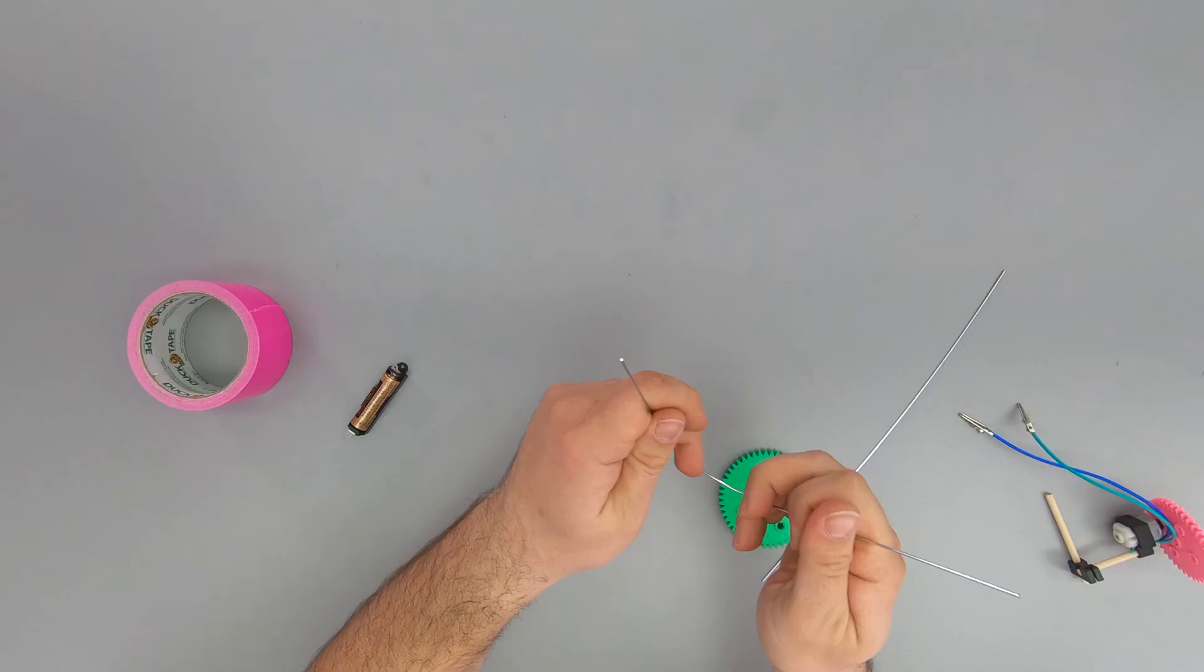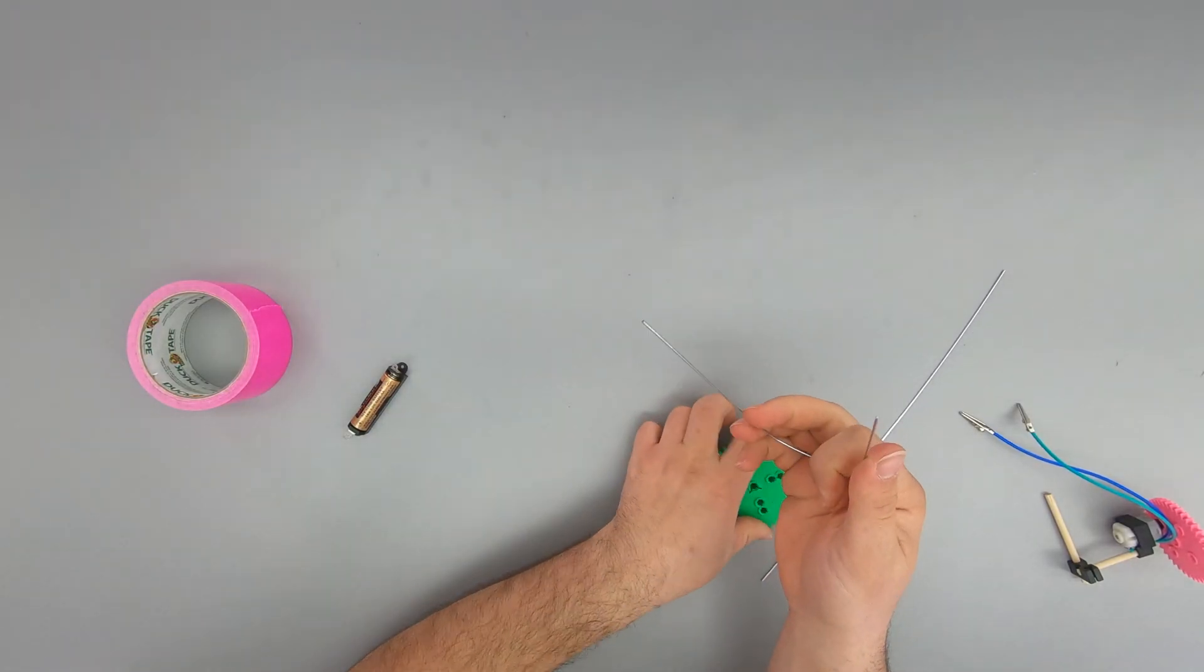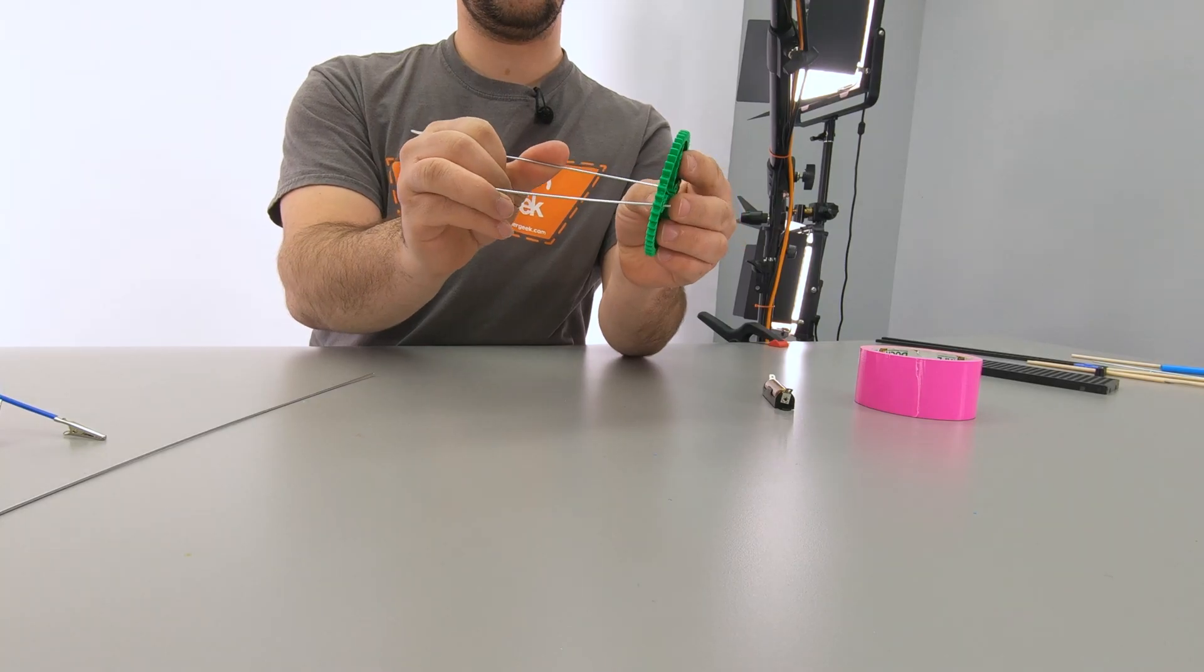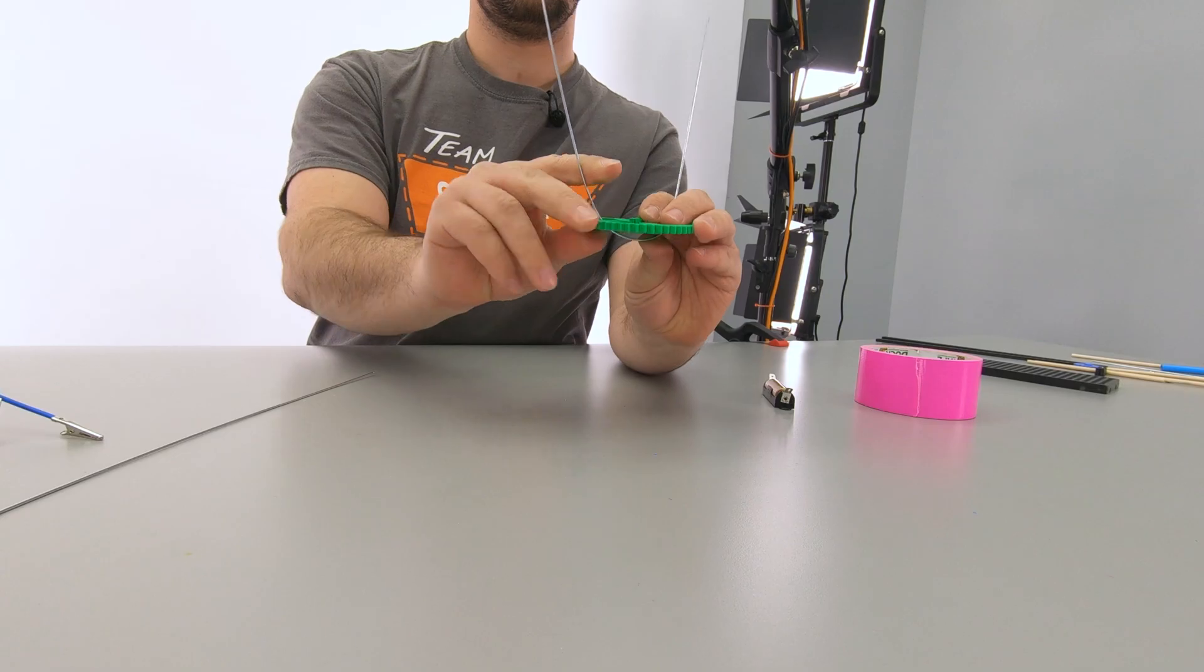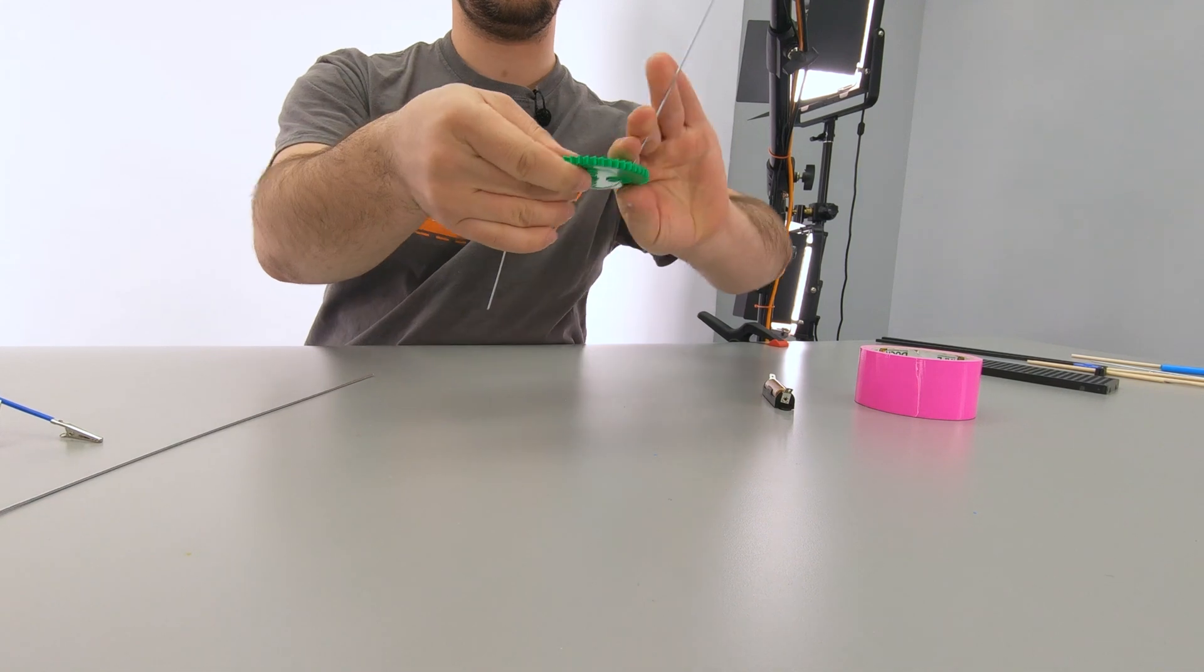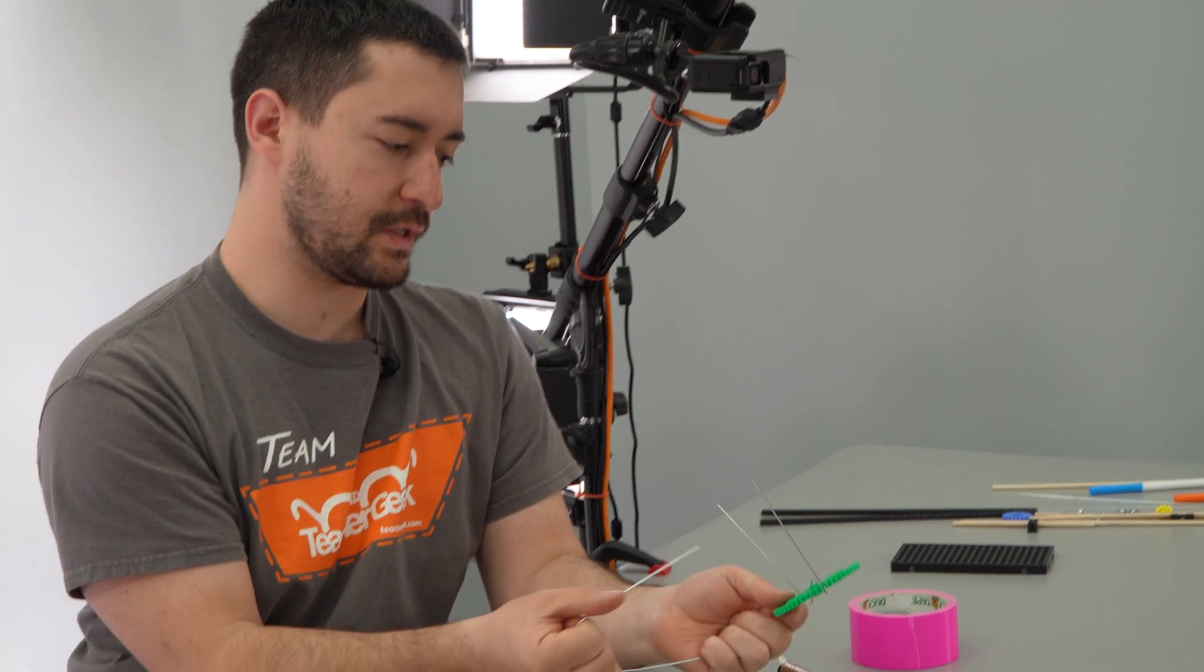You can also use steel wire to give your WiggleBot legs. Just bend it into a U and go through some of the outside holes of a gear. Wrap them around back down, and it's got legs. I'm going to give mine four legs so it's nice and stable.